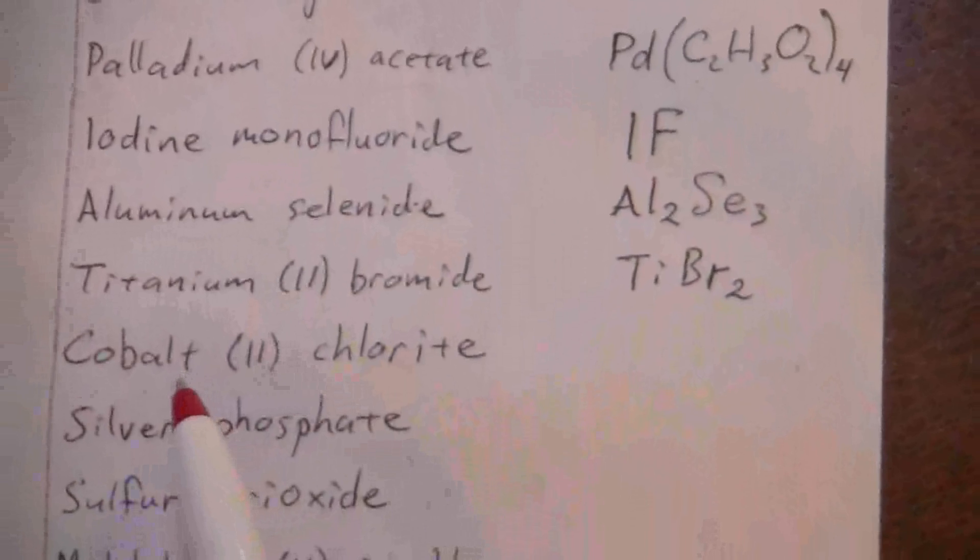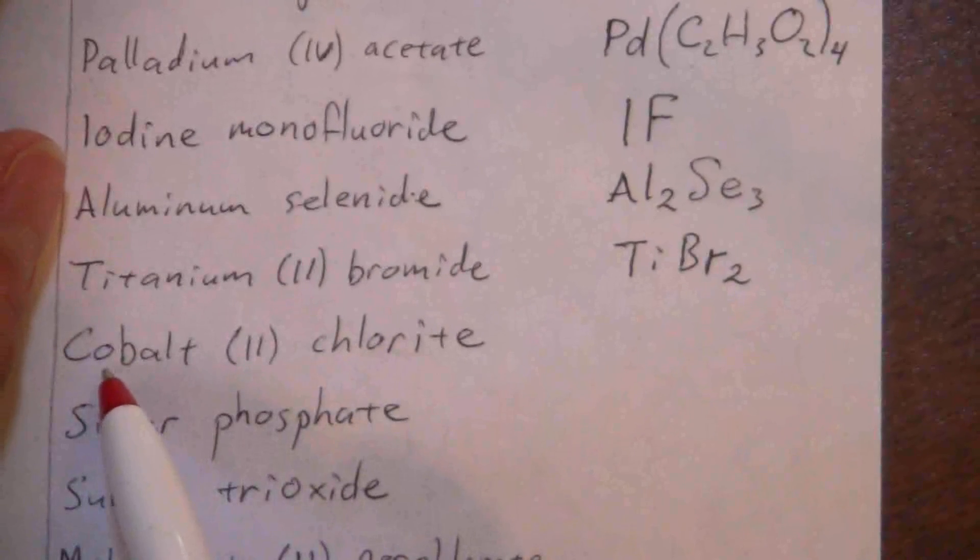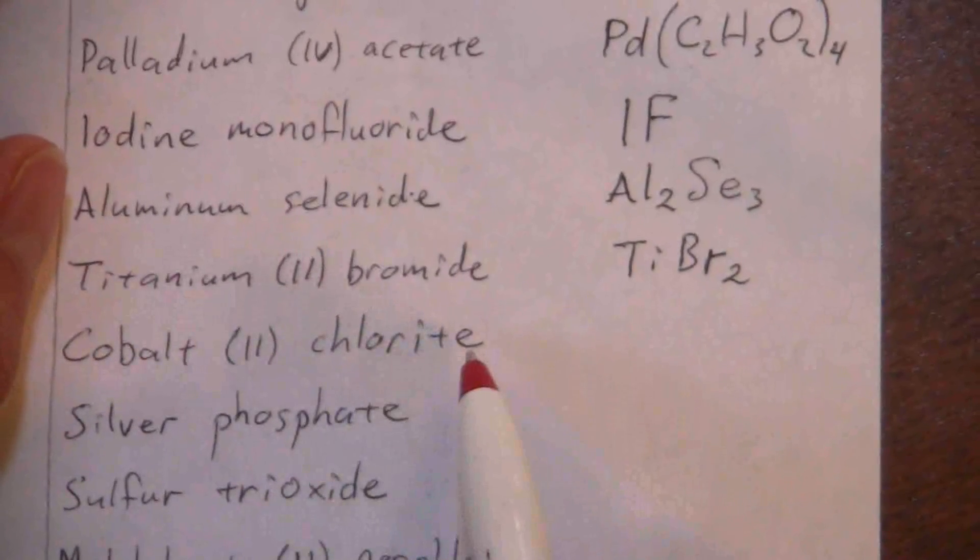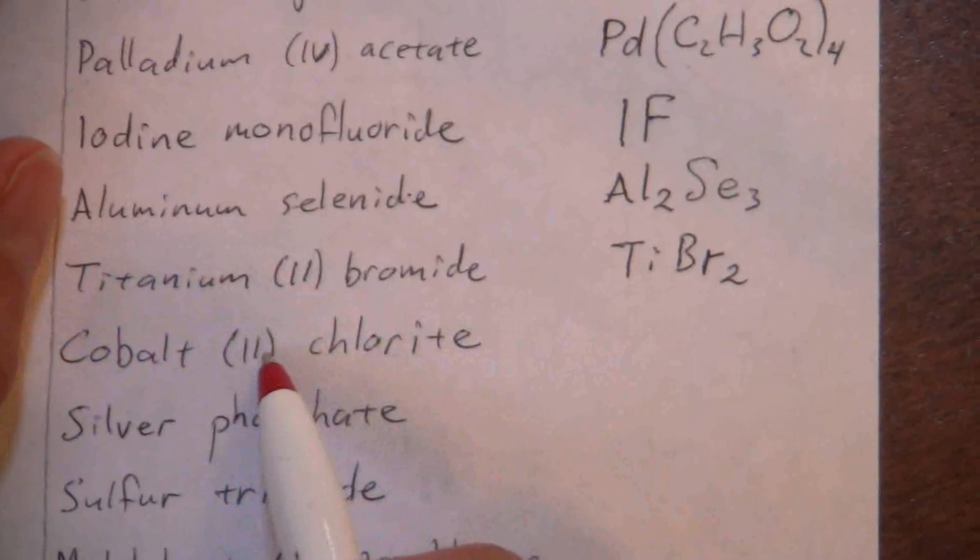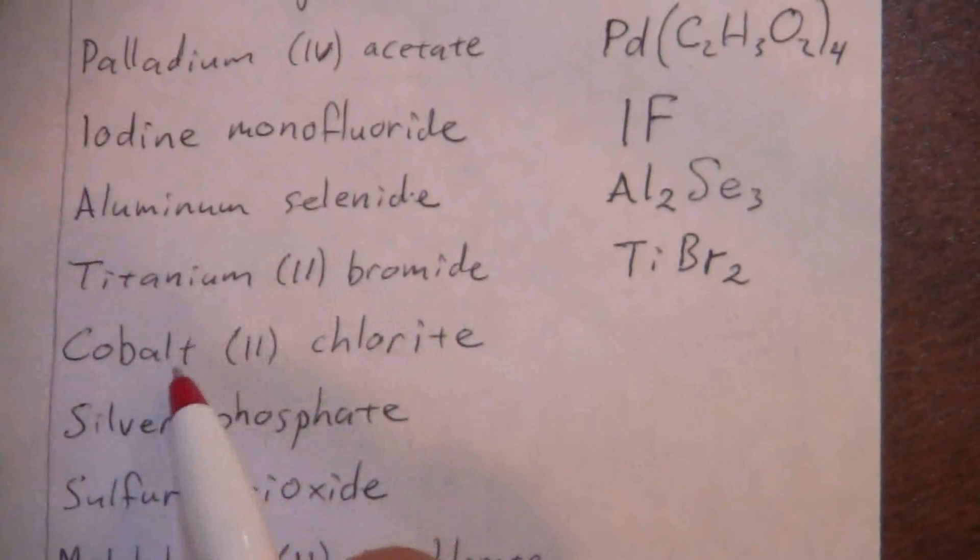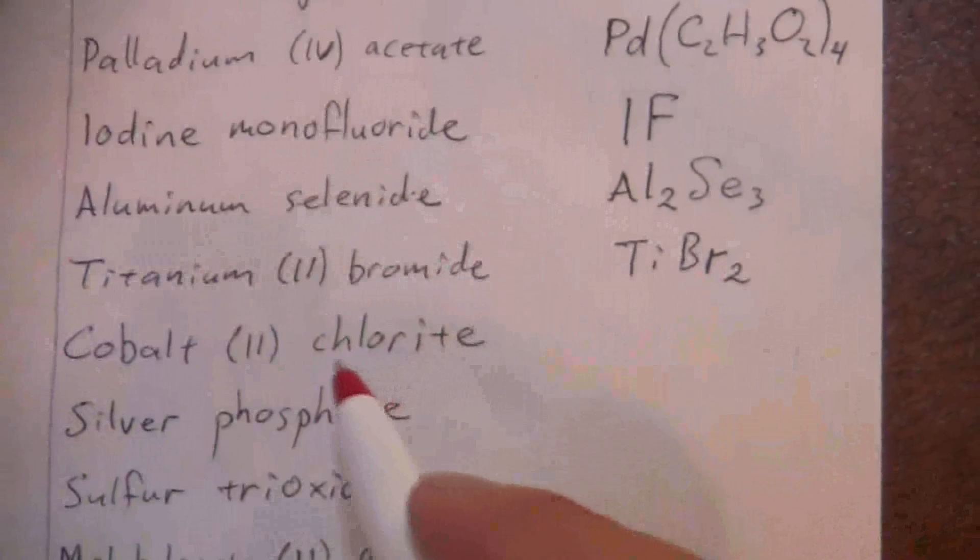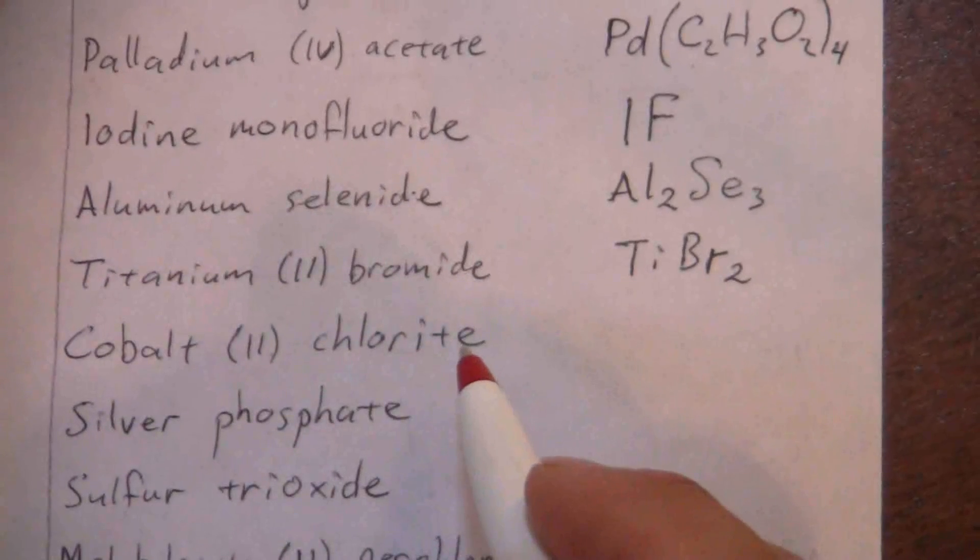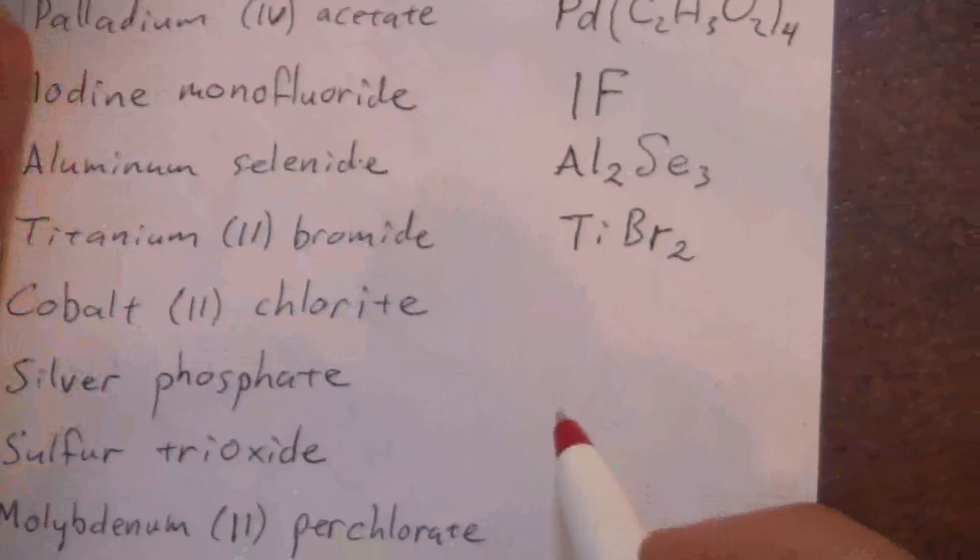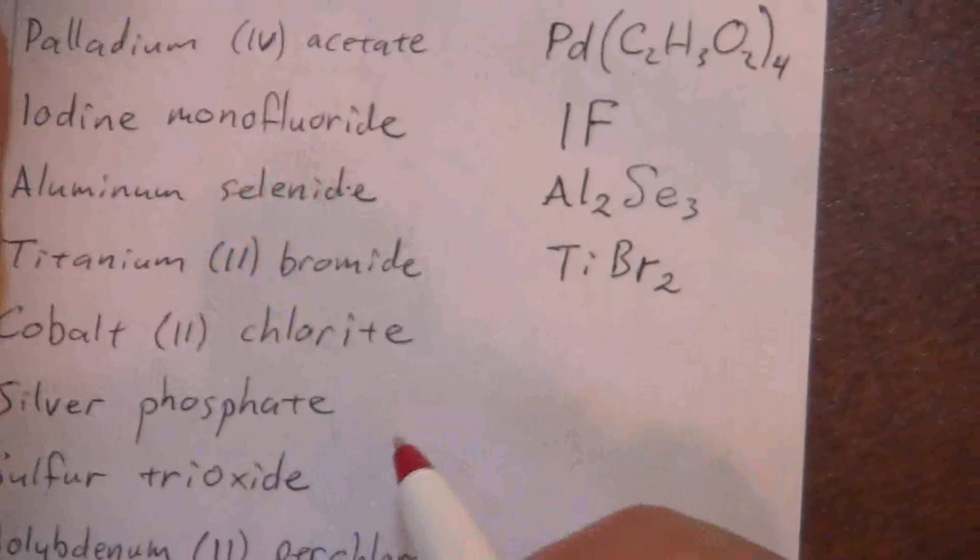Here I have cobalt (II) chlorite. The charge of the cobalt, these are those transition metals. And chloride, this is one of the somewhat less common but still important ions.